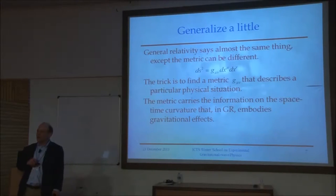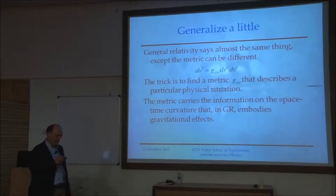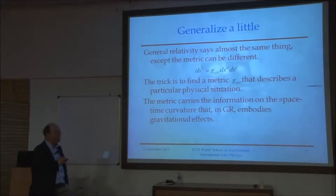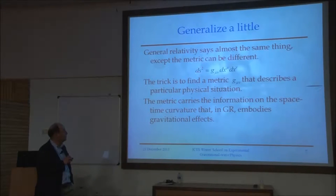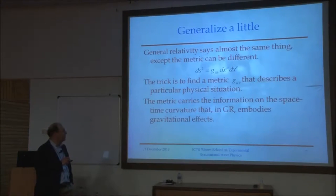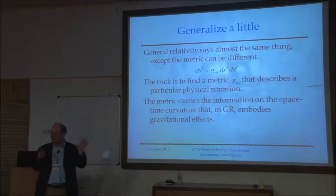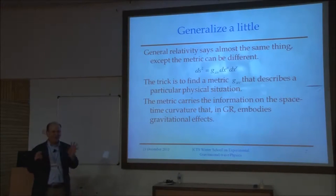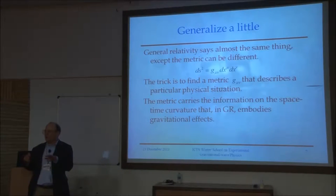We're talking about a gravitational effect, so I can't just live in the world of special relativity — I have to move to general relativity, the relativistic theory of gravity. General relativity has a statement that looks almost the same for the interval between two spacetime events, except the metric tensor is, in general, not just this simple object — minus, plus, plus, plus — but instead, depending on the physics you're describing, has some more interesting structure.